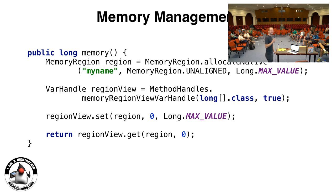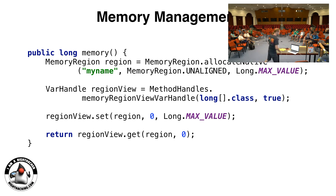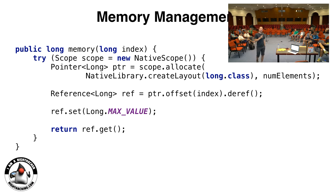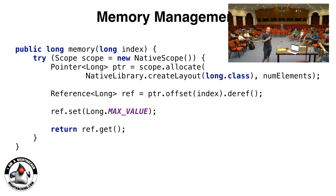Then there was another discussion I had with Paul Sandos — now we have byte buffers, but they're still 32 bits. So how do we make it 64 bits? That was the proposal that Paul and Ivan came up with: you actually create a scope, and inside of the scope you can do multiple allocations. The scope is auto-closable, so whenever you leave the scope it will automatically be deallocated.